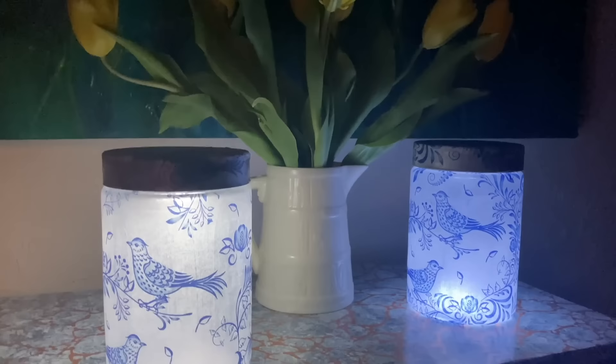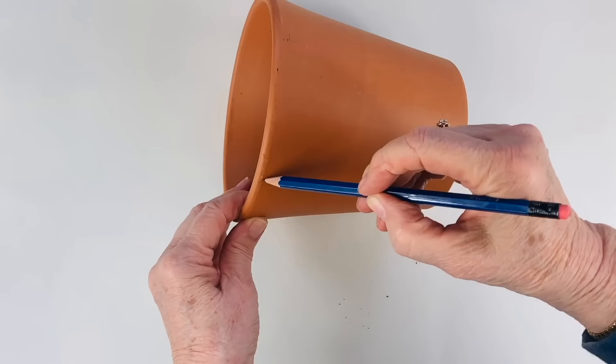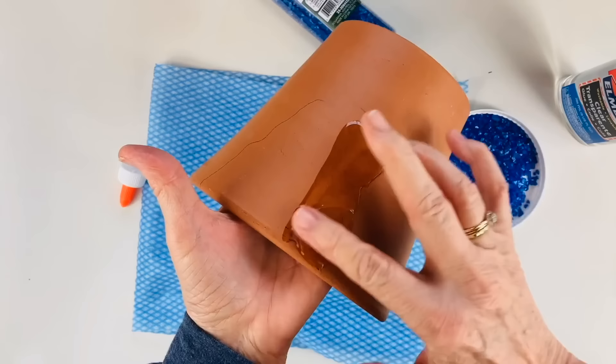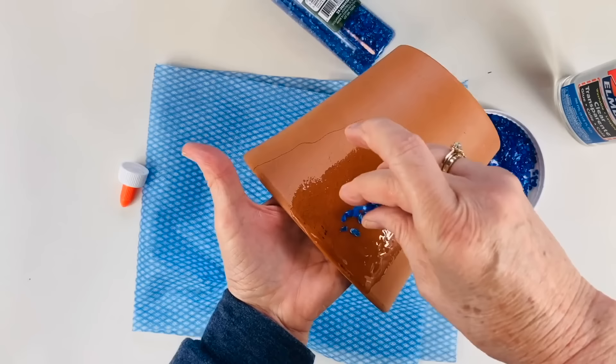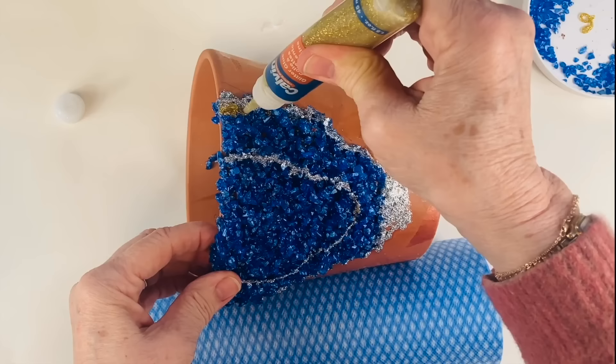I made a trip to my local dollar store. Taking a terracotta pot, I draw a very random shape. Taking the clear glue, I pour some onto the side of the pot. Picking up some of the blue gravel and press it down. I then put some of the silver glitter glue around the edge, and here is my geode terracotta pot.